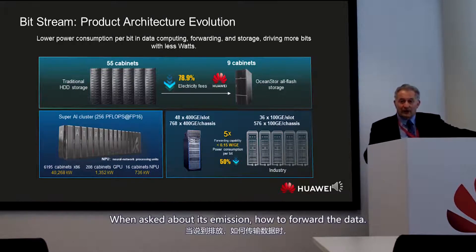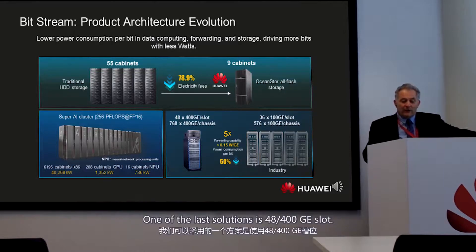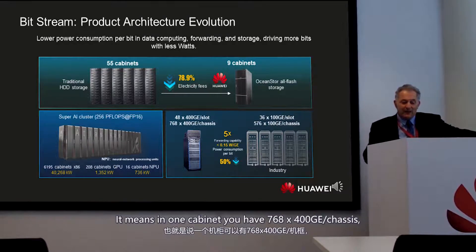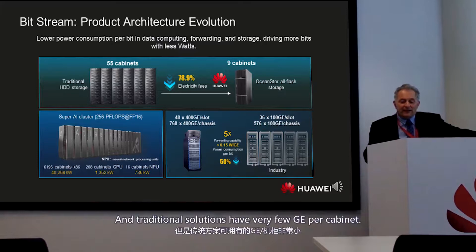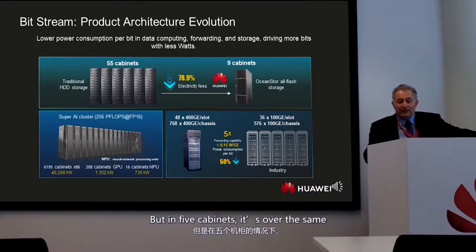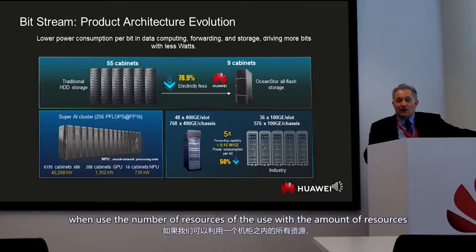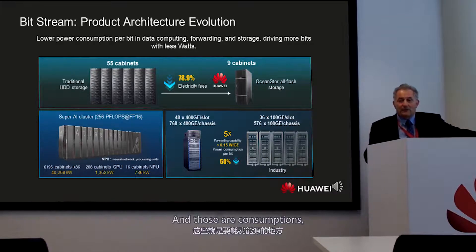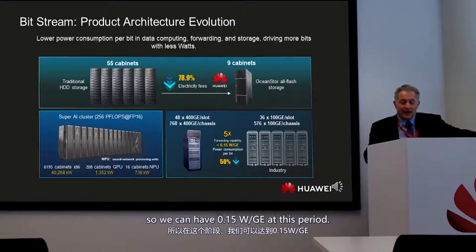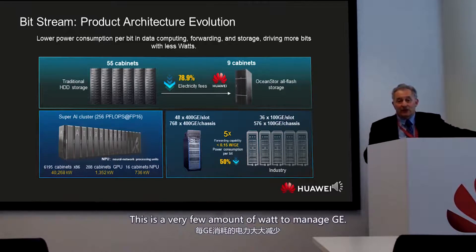The last efficiency area is transmission. One of the latest solutions is 48-port 400 Gigabit Ethernet. In one cabinet we have 768 400GbE ports — an incredible amount of capacity. Compared to a traditional solution requiring five cabinets for the same capacity, we reduce resources and material used, and also decrease consumption to 0.15 Watts per Gigabit Ethernet port.